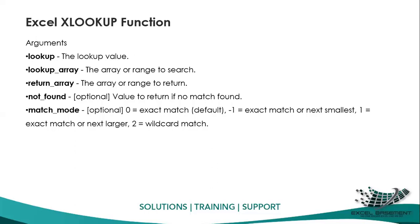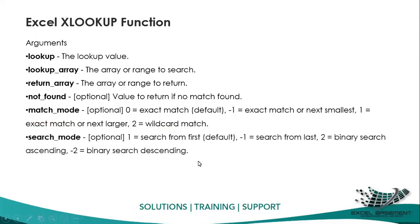In match mode there are four options: zero for exact match; minus one for exact match or next smallest; positive one for exact match or next larger; and two for wildcard search using asterisk or question mark for partial matches. In search mode there are also four options: positive one to search from first (default); minus one to search from last (reverse search); two for binary search ascending; and minus two for binary search descending.